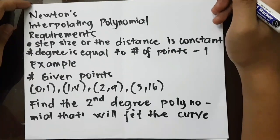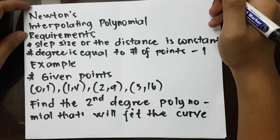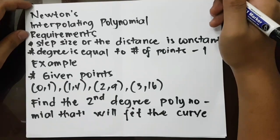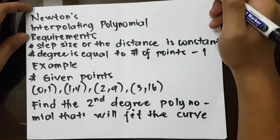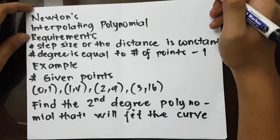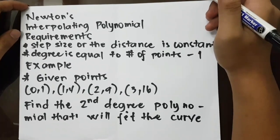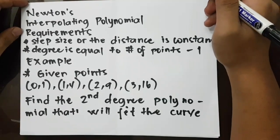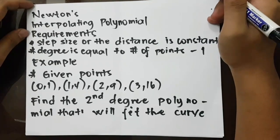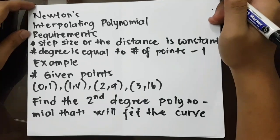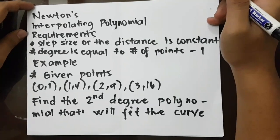Today I will give you a tutorial on Newton's Interpolating Polynomial. Newton's Interpolating Polynomial is a type of interpolation in which you will be given a set of points and the output would be an approximating polynomial that will fit the curve. The requirements are that the step size or the distance is constant — the x-distance or step size is uniform — and the degree is equal to the number of points minus 1.